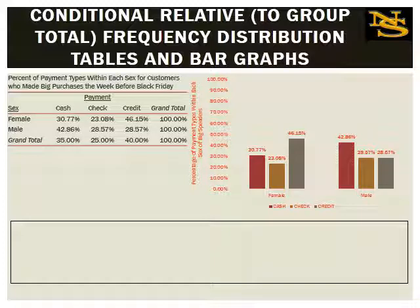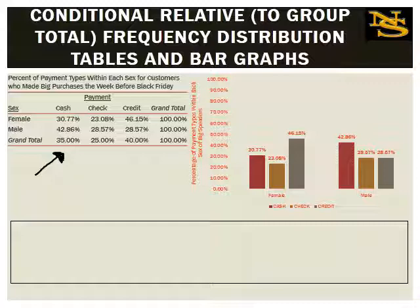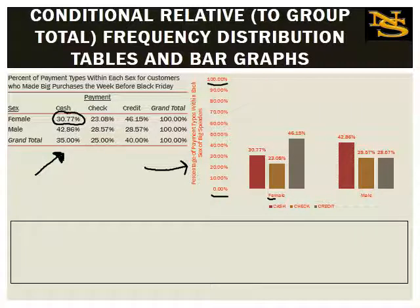Whenever I show a table with calculations, that's never something you'd present in a board meeting — you'd only show the final percentages. So here's the clean conditional table. The graph uses 0% to 100% on the y-axis as best practice. You can see that out of all females, 30.77% paid cash — and that aligns with the female cash bar in the graph at 30.77%.